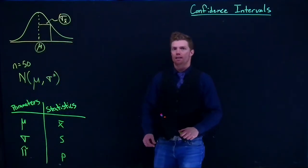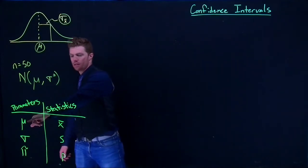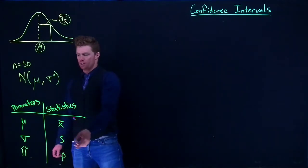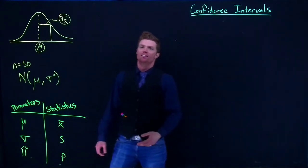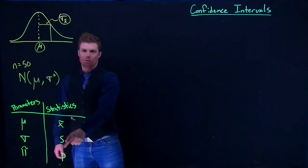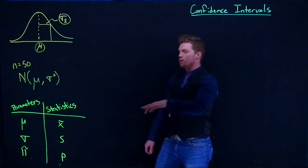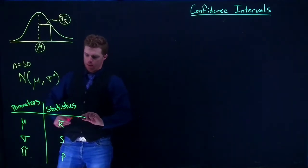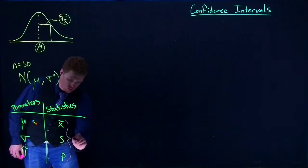So we know that mu is our true mean and x-bar is the mean of the sample we took from our population. Sigma is the true standard deviation and s is the standard deviation of our sample. Pi is the true proportion, whereas p is just the proportion of the sample that we took.